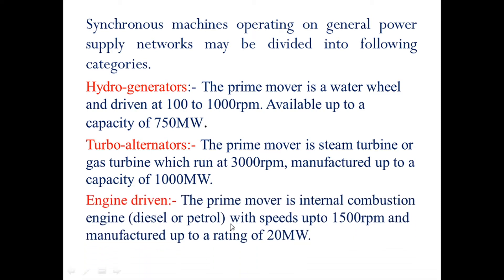Engine-driven generators use an internal combustion engine — either diesel or petrol — as the prime mover, with speeds up to 1500 RPM and ratings up to 20 megawatt. Industries use these captive power plants during power failure or restricted grid supply, with a maximum power rating of around 20 megawatt.